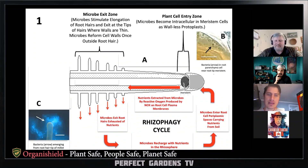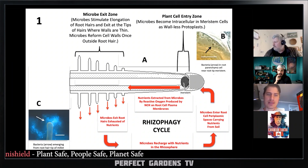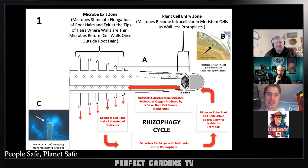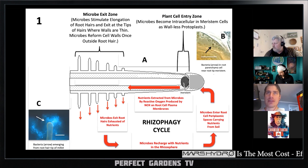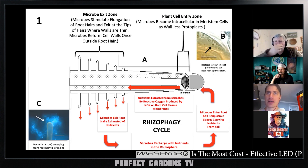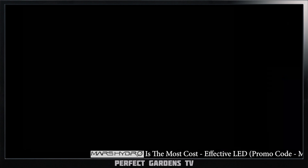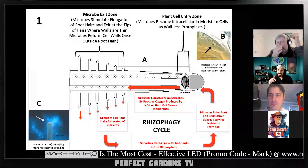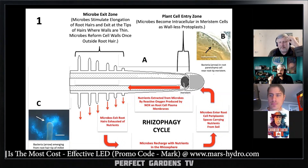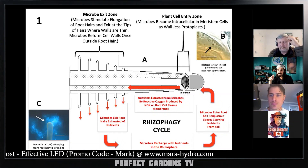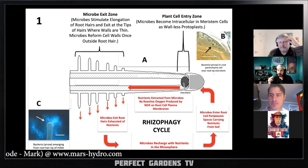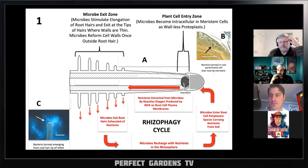You guys found exit points through these little tips. Have you guys found how the bacteria are actually entering? Are the ones that get dissolved the bacteria that have completed their cycle and returned back to the plant with the nutrients they required?